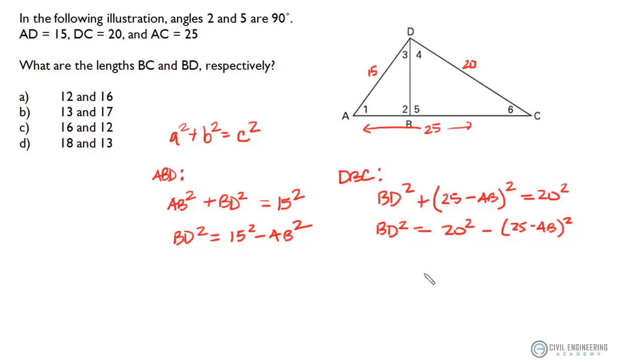Okay, so now we've got both of these triangles defined in terms of side BD, and what we can do now is equate these two equations and I think we'll be able to solve this. So if we say okay, 15 squared minus AB squared equals 20 squared minus 25 minus AB squared. In the interest of time we're going to try to speed this up because we've got a lot of terms here that we've got to combine.